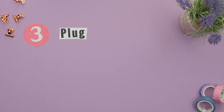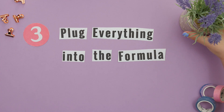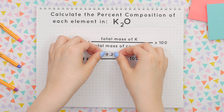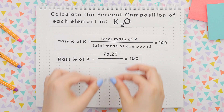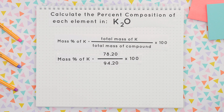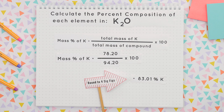Step 3: plug everything into the formula. We'll plug in the total mass of potassium and the total mass of the compound. Make sure to divide first, then multiply the answer by 100. We'll round to 4 sig figs to get our percent composition of potassium.